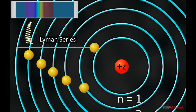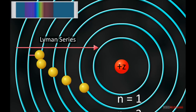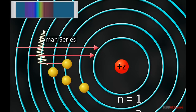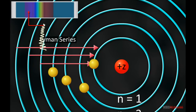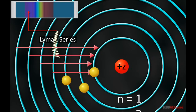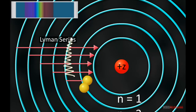When a transition from higher orbits to the first orbit occurs in the atom, the Lyman series is obtained. The values of frequencies obtained in this transition lie in the ultraviolet region of the electromagnetic spectrum.